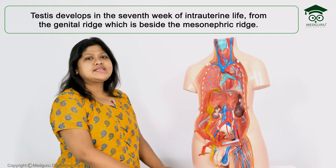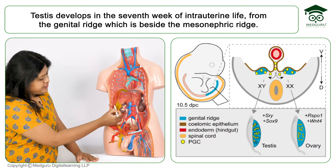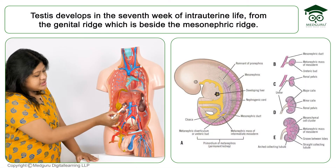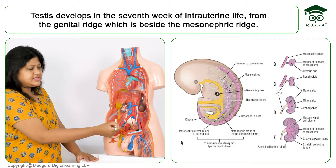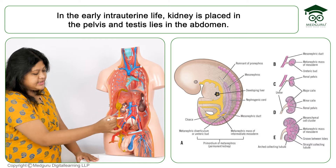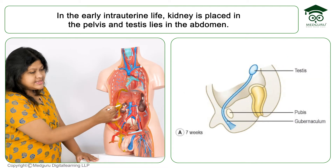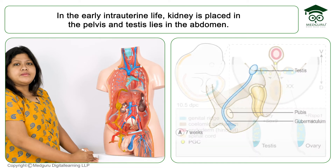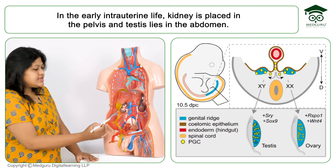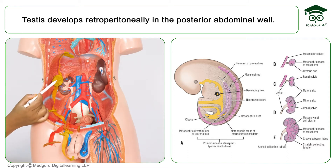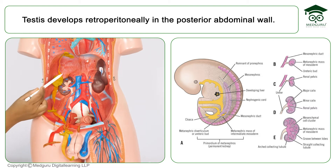Testes develops in the seventh week of intrauterine life, from the genital ridge. This is the kidney — the adult intra-abdominal part being seen. In the embryological part, here is the kidney and there is the mesonephric ridge. The kidney develops in the intrauterine life in the pelvis whereas the testes develops in the abdomen, from the genital ridge just beside the mesonephric ridge. The testes develops retroperitoneally in the dorsal abdominal wall or the posterior abdominal wall.